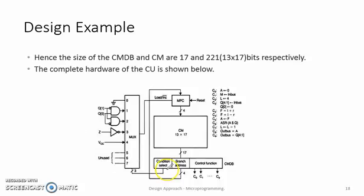The initial 3 bits will be the condition select bits which are given as inputs to the 8 to 1 multiplexer. If there is a branch, then the 4-bit branch address is also extracted from the control memory data buffer, and the remaining 10 bits will give the control signals. Whenever there is sequential execution flow, the output of the MUX will be the increment bar signal given to the microprogram counter.